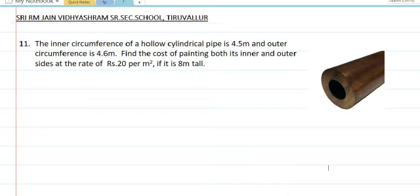The inner circumference of a hollow cylindrical pipe is 4.5 meter and outer circumference is 4.6 meter. Find the cost of painting both its inner and outer sides at the rate of rupees 20 per meter square if it is 8 meter tall.